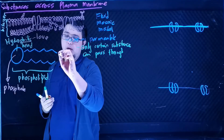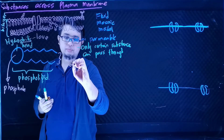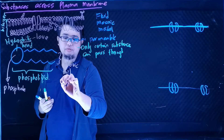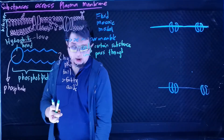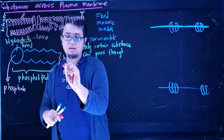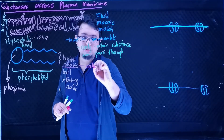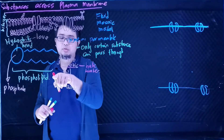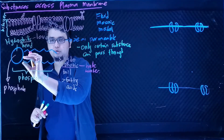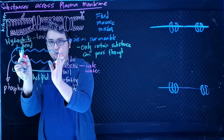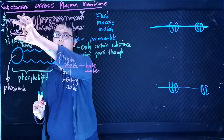The hydrophilic head is made of phosphate. Then we have our hydrophobic tail, which is made up of fatty acids. This hydrophobic tail is phobic to water — it doesn't like water, it hates water. These fatty acids are bound to the phosphate group. Together they are called phospholipid and they make up the first two layers of our plasma membrane.